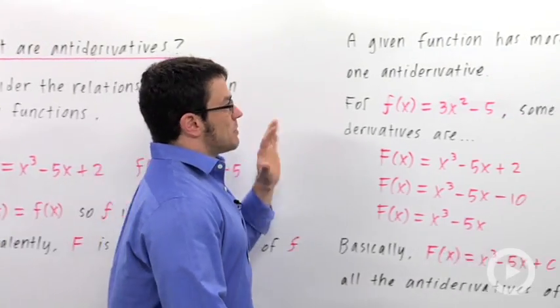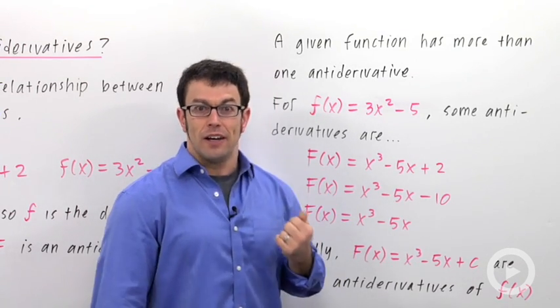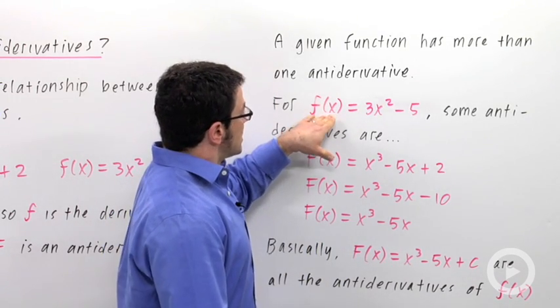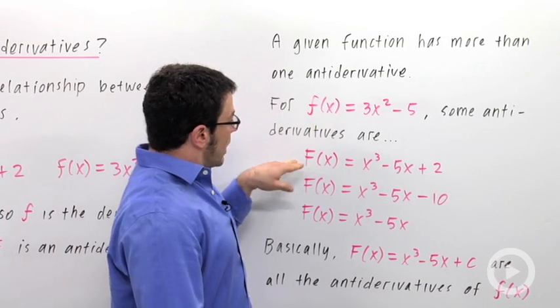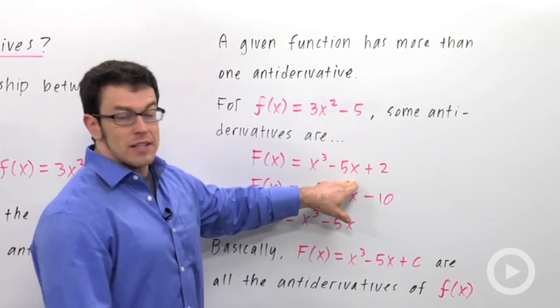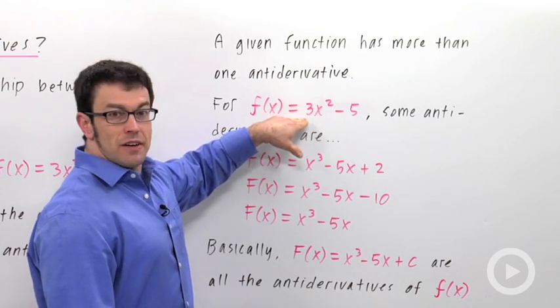But there's one difference between the antiderivative relationship and the derivative relationship, and that is, there's more than one antiderivative. So if you consider this as our function, I just explained that one antiderivative is x cubed minus 5x plus 2, because this guy's derivative is 3x squared minus 5.